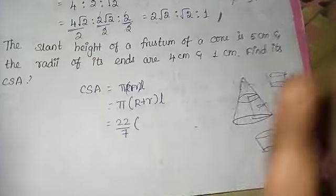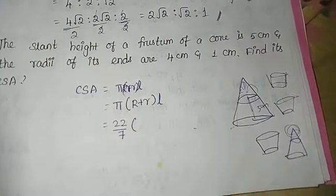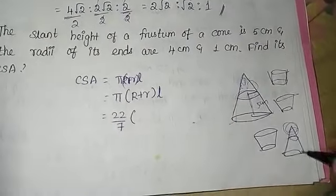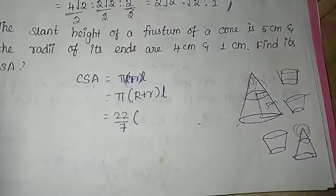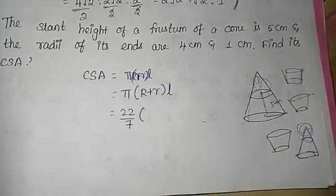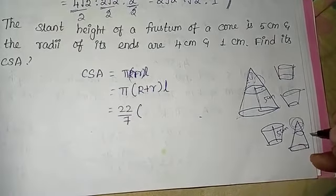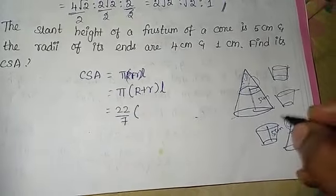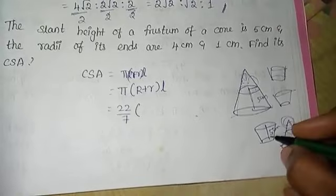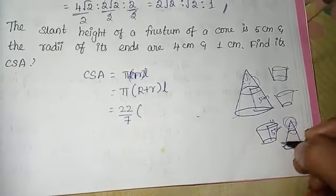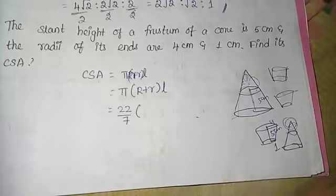Now, we have slant height, here we have height, here we have 5cm. Next we have radius, end to end radius. The larger radius is 4cm, here we have radius is 1cm.